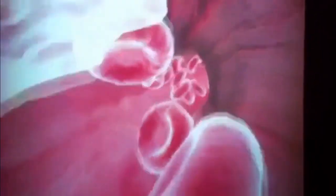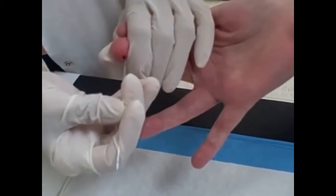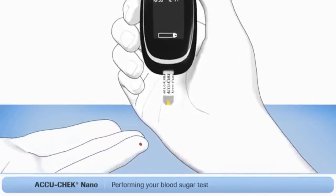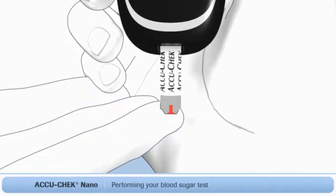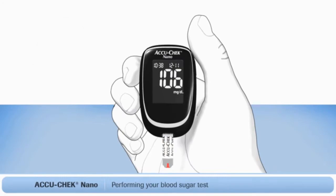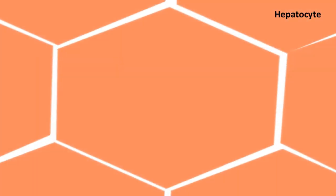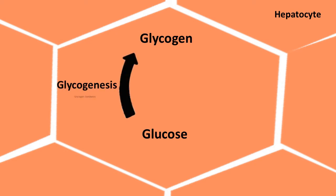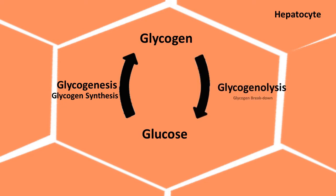Blood glucose is a source of energy for the entire human body. The upsurge in blood glucose triggers glycogen synthesis, which sweeps away extra-high glucose from blood by consuming it to synthesize glycogen — a process called glycogenesis. On the other hand, a decline in blood glucose concentration is countered by glucose influx through breakdown of glycogen, and that process is called glycogenolysis.